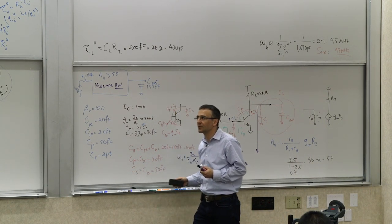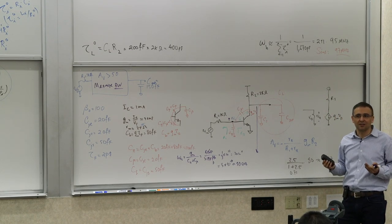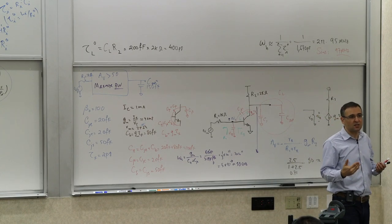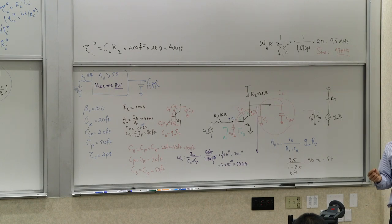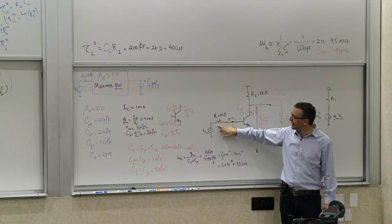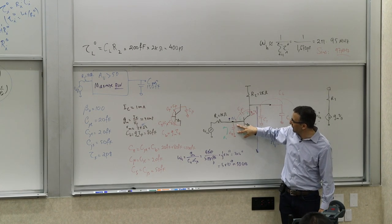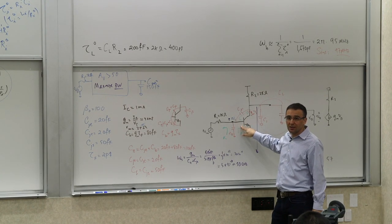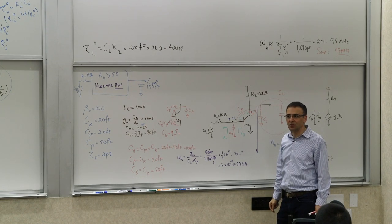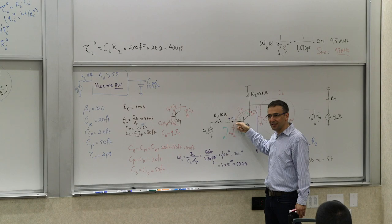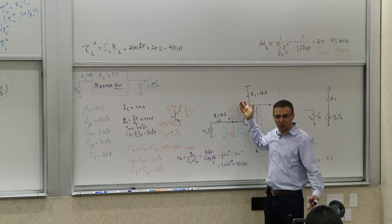The solution is to use a stage that doesn't have a capacitance connected between input and output suffering from Miller multiplication. The common-base stage fits this — it doesn't have that cross-capacitance. But the common-base has low input resistance (Rm ≈ 25 Ω), which would kill the gain at the input divider. Combining the good parts of common-emitter and common-base gives us the cascode. This is the number one reason we use cascode — the bandwidth improvement.